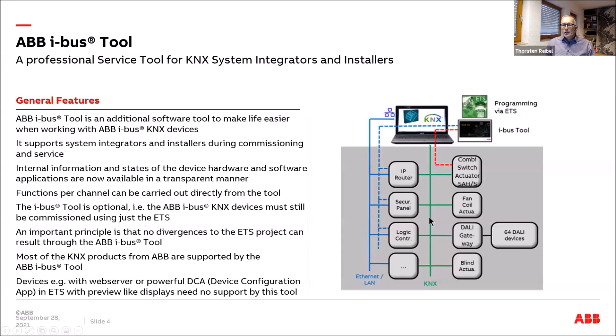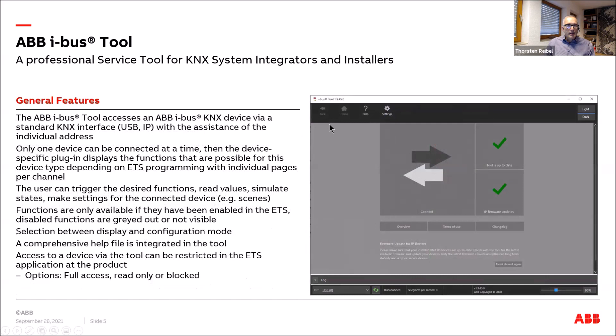On the right you see the typical constellation: you have your KNX system, a PC with ETS to program everything, and additionally the ABB iBAS tool installed. The prerequisite is a Windows PC. You connect via USB or IP interface — just like with ETS — and you need at minimum the individual address of the device downloaded. Then a device-specific plug-in is shown with all functions and individual pages per channel for multi-channel devices.